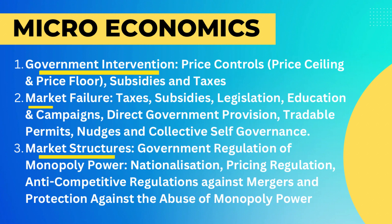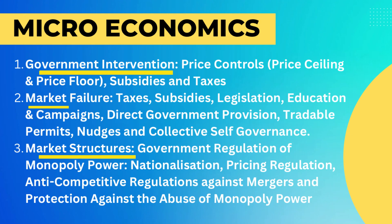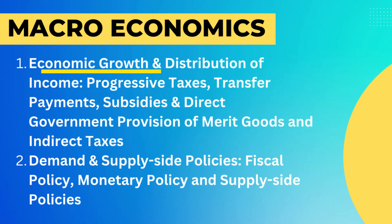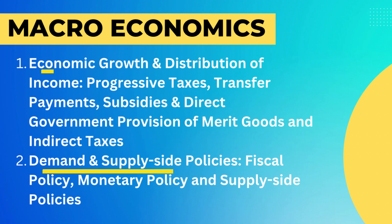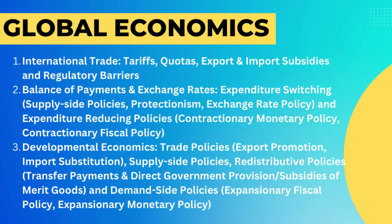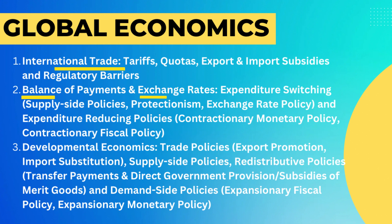The third topic is market structures — look out for government regulation on monopoly power, nationalization, pricing policy, anti-competitive regulations against mergers, and protection against the abuse of monopoly power. Another favorite is economic growth and distribution of income — progressive taxes, transfer payments, subsidies, direct government provision of merit goods, and indirect taxes. Demand and supply-side policy is also a favorite — fiscal policy, monetary policy, and supply-side policies. For international economics, look at trade tariffs, quotas, export-import subsidies, and regulatory barriers. For balance of payments and exchange rates, look at expenditure-switching policies such as supply-side policies, protectionism, and exchange rate policies, as well as expenditure-reducing policies like contractionary monetary and contractionary fiscal policies.